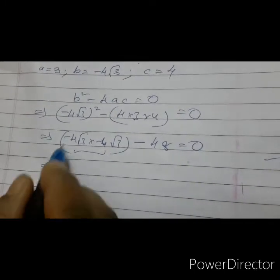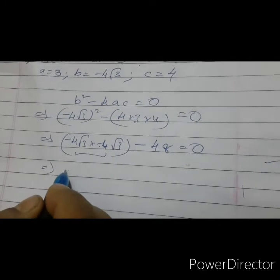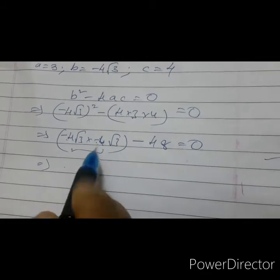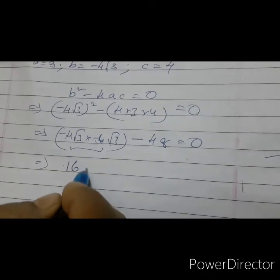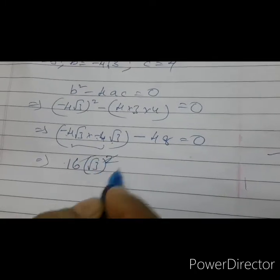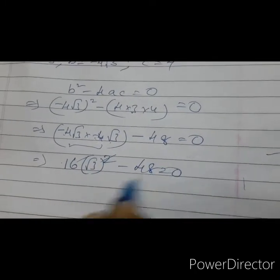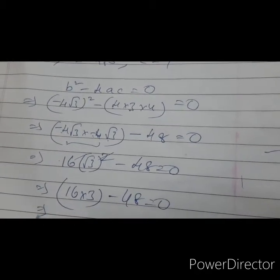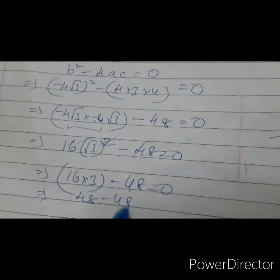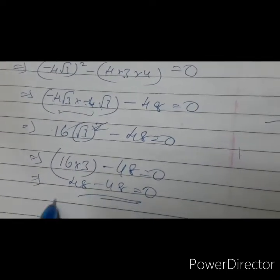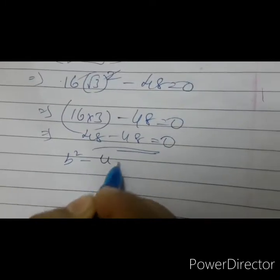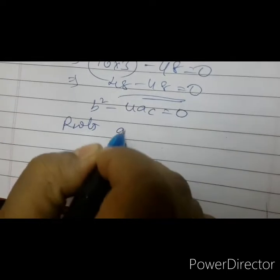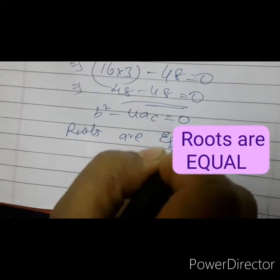Now, minus into minus is plus — no need to write the sign. Then 4 squared is 16, root 3 into root 3 whole squared — the square and root get cancelled — minus 48 equals to 0. Now 16 into 3 minus 48 equals to 0. 16 into 3 is 48. So 48 minus 48 equals to 0. Therefore b squared minus 4ac equals to 0, which means the roots are equal.